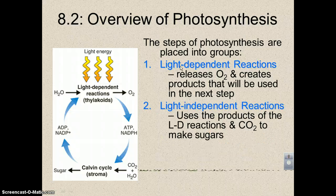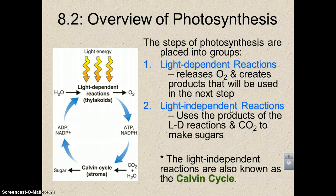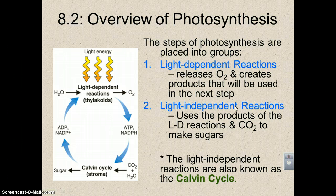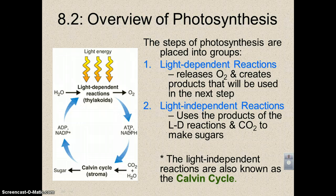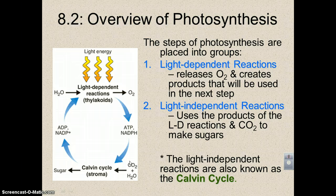The second step is called the light-independent reactions because it doesn't use light directly. Sometimes this is known as the Calvin cycle, named after the scientist who discovered it. This one will use the products of the light-dependent reactions — ATP and NADPH — and it's also going to use some CO2 from the atmosphere, and that's going to be used to make sugars.